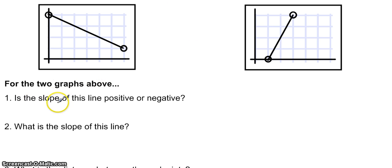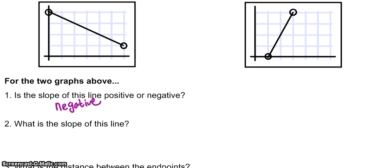So number one, is the slope of the line above positive or negative? Let's take a look at this line first. Well this line is decreasing, which means it's going to have a negative slope. So the slope of this line is negative, again because it's decreasing.